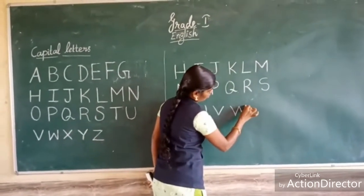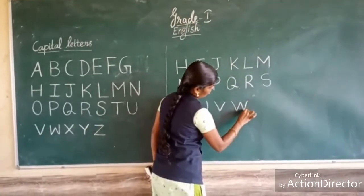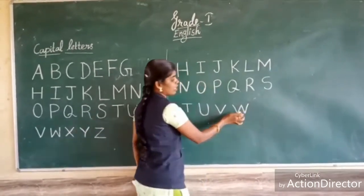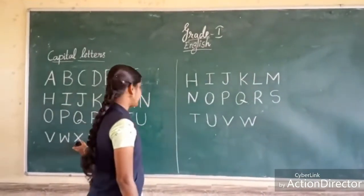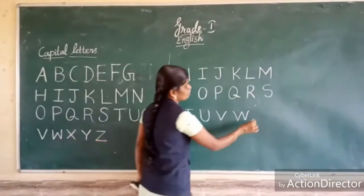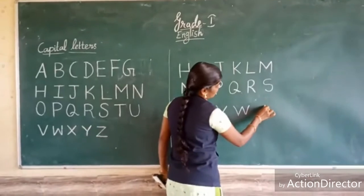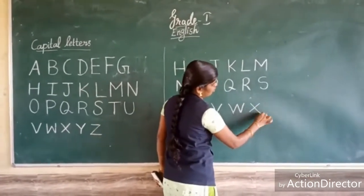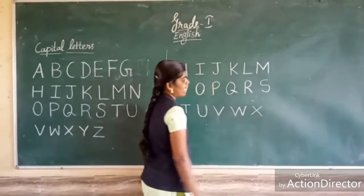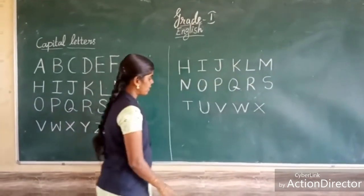Next, W. W is made of two V shapes. One cross line, another cross line, another cross line, another cross line. This is W.